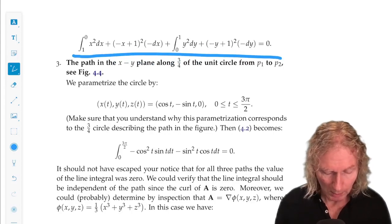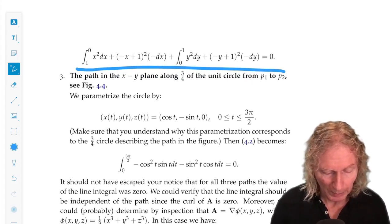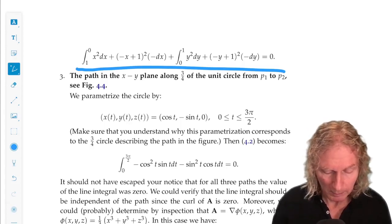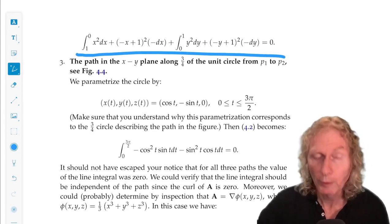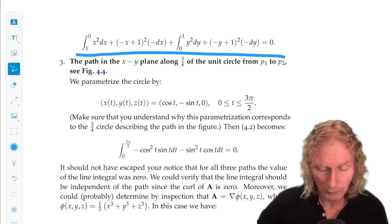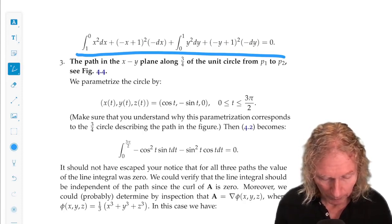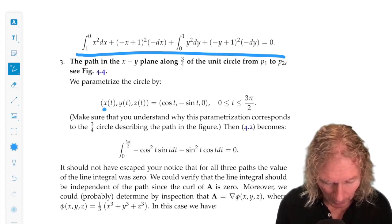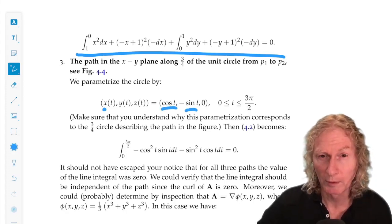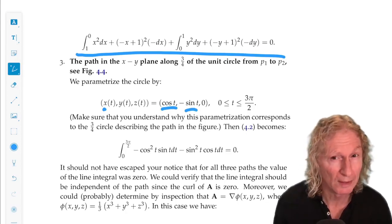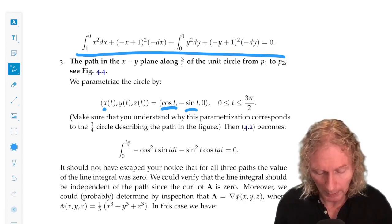And our third path, this is going to be a path in the x-y plane along 3 quarters of the unit circle from P1 to P2. So, cosine t and sine t parameterize a circle in the x-y plane. Z is 0, so dz is 0, so we're in the plane.